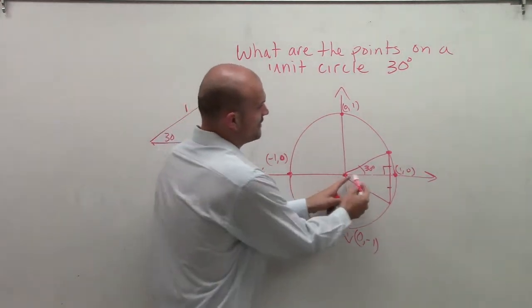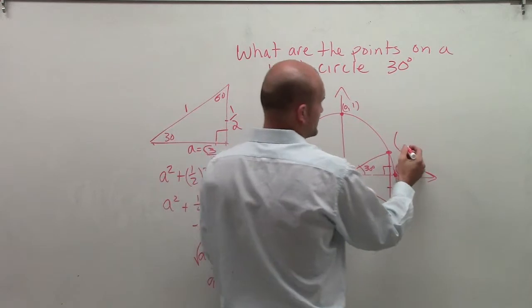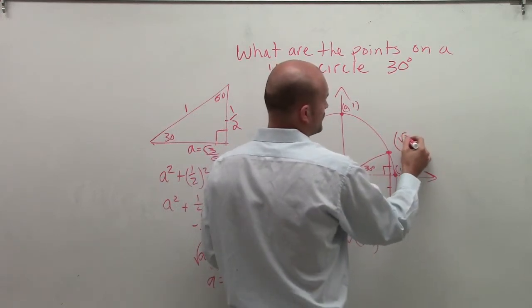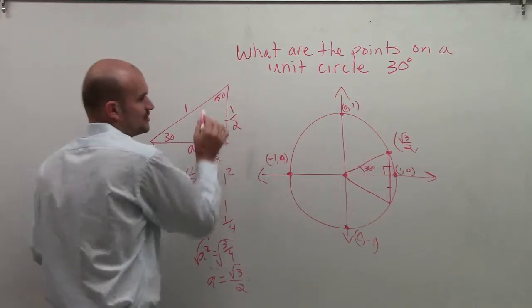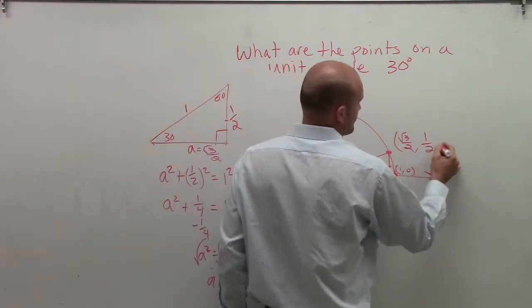So what that means is this distance right now is the square root of 3 divided by 2. So if you think about it, if that distance, that is now going to be your x-coordinate. So it would be the square root of 3 divided by 2. And then the vertical distance, or your y-coordinate, is going to be 1 half.